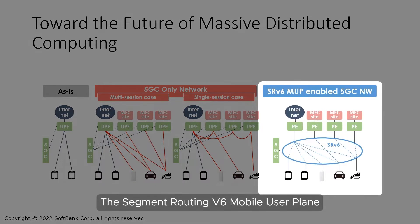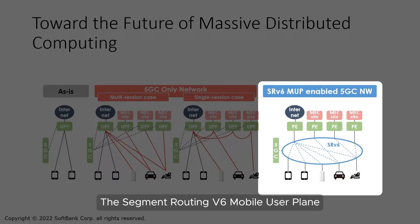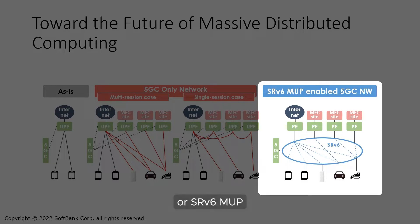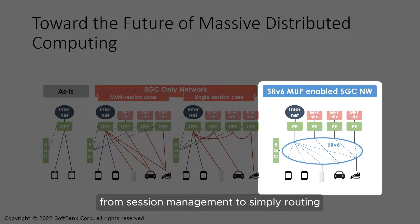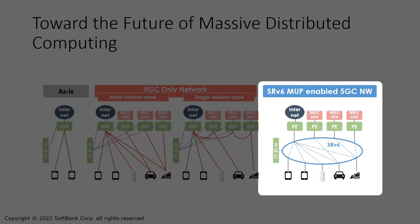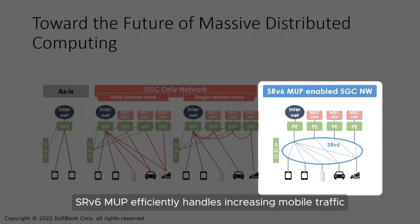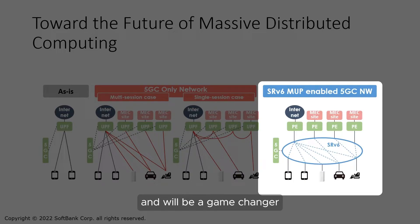The Segment Routing V6 Mobile User Plane, or SRV6 MUP, eliminates pain points in the 5G architecture by transforming the mobile user plane from session management to simply routing. SRV6 MUP efficiently handles increasing mobile traffic and will be a game-changer for the coming 5G IoT era.